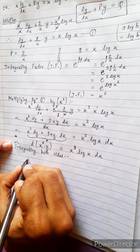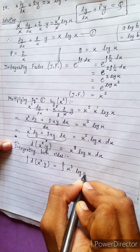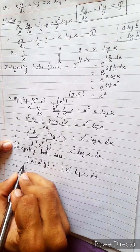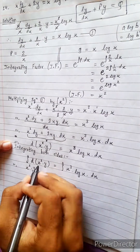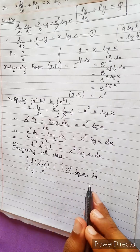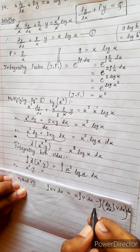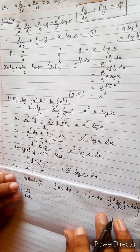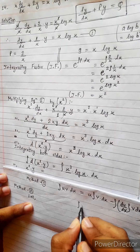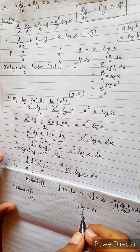Integrating both sides: ∫d(x²y) = ∫x³ log x dx. The left side integrates directly by the anti-derivative to give x²y. So x²y = ∫x³ log x dx. Now we need to solve the right-hand side integral ∫x³ log x dx using integration by parts.